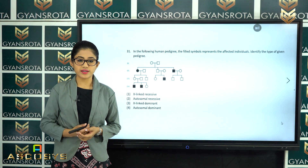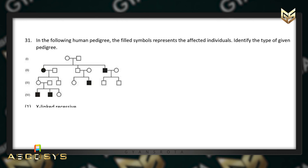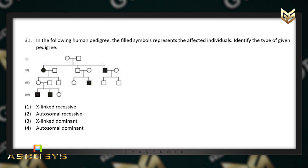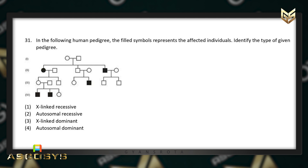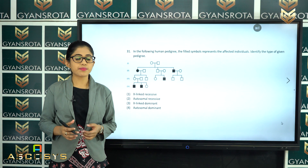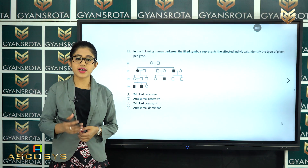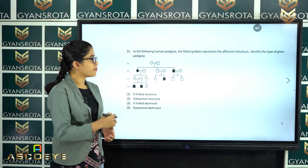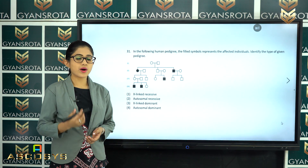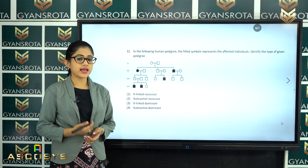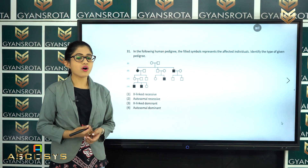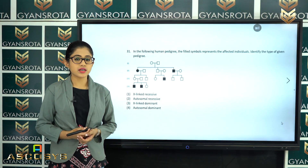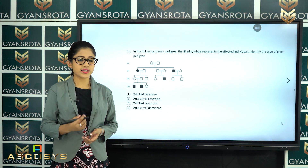The next question is question number 31. In the following human pedigree, the filled symbol represents the affected individuals. Identify the type of given pedigree. In the chapter Principles of Inheritance and Variations, we have discussed about pedigree analysis. From the given pedigree, you have to analyze what the abnormality is — whether it is X-linked recessive, autosomal recessive, X-linked dominant, or autosomal dominant.